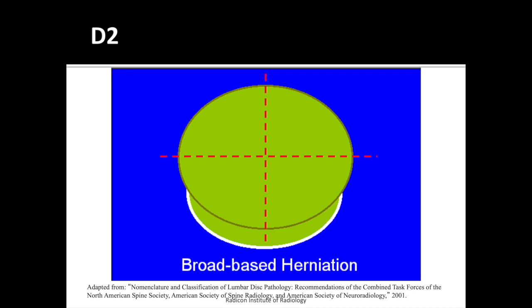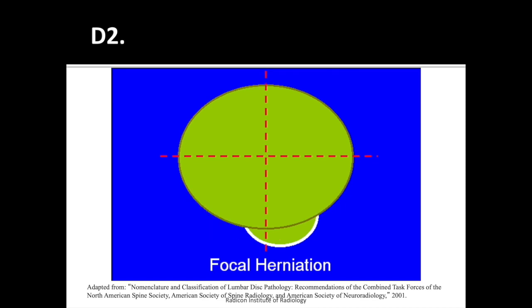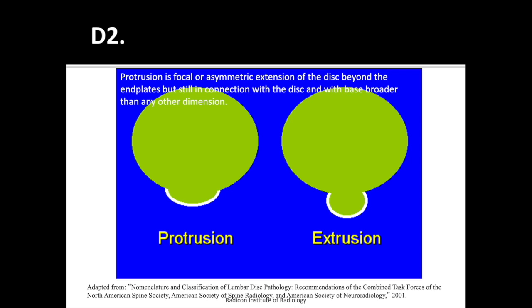If the disc herniation or disc prolapse covers less than 50% of the circumference of the end plate or disc margin, it is called disc herniation. When it is between 25 and 50 percent, it is a broad-based disc herniation. If it is less than 25% or 90 degrees of the disc circumference margin, it is a focal disc herniation.